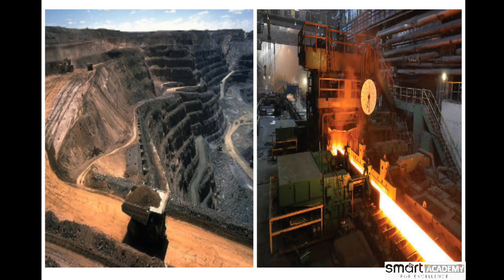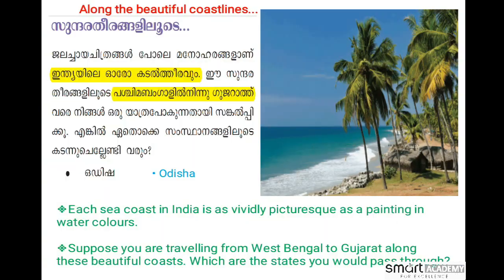We are going along the beautiful coastal line. Each sea coast in India is widely pictured like a painting in water. Suppose you are travelling from West Bengal to Gujarat along this beautiful coast — which are the states you would pass through?